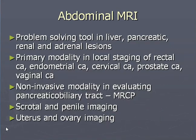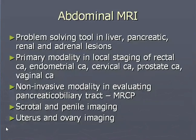Abdominal imaging can also be done with MR because MR is much more sensitive to soft tissue differentiation as compared to CT. Different problems which can involve the abdomen or abdominal organs include: solving tools in liver, pancreas, renal and adrenal lesions; primary modality in local staging of rectal carcinoma, endometrial carcinoma, cervical carcinoma, prostate and vaginal carcinoma; non-invasive modality in evaluating the pancreatobiliary tract — that's MRCP — and scrotal and penile imaging, uterus and ovarian imaging.